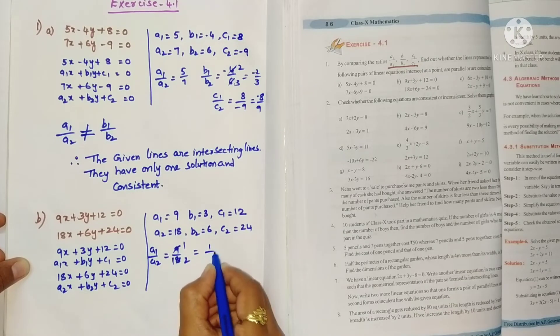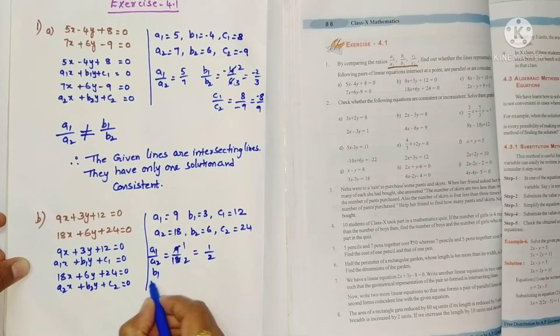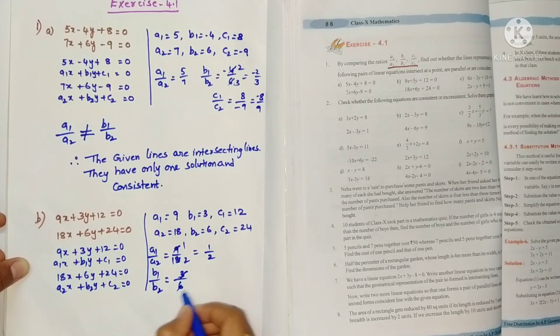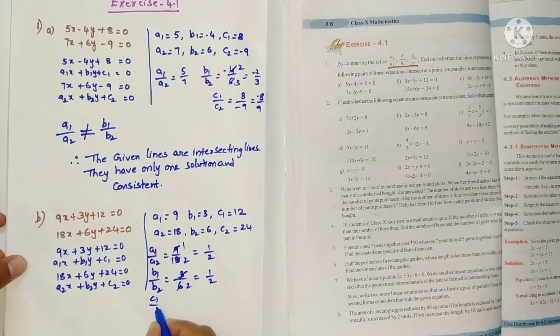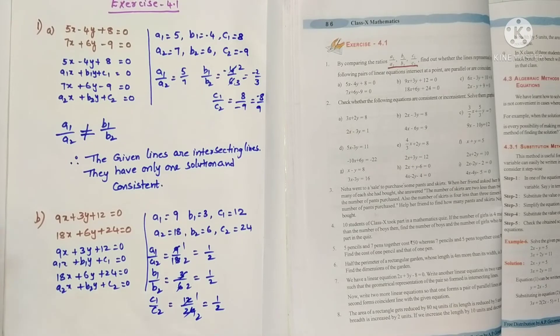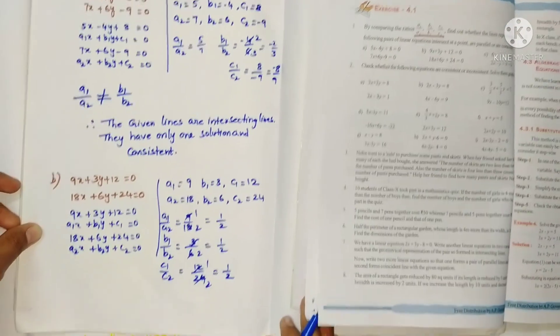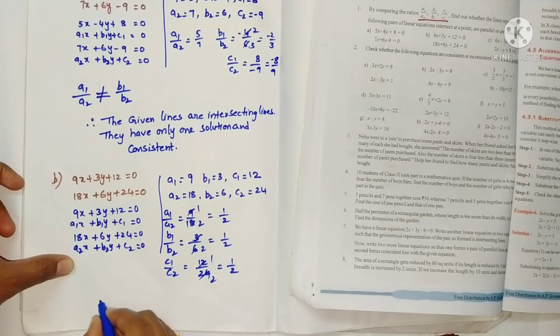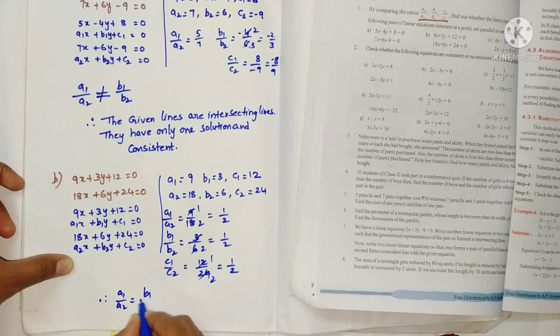So a1 by a2 is 1 by 2, b1 by b2 is also 1 by 2, c1 by c2 also 1 by 2. So finally what can we write: a1 by a2 equals b1 by b2 equals c1 by c2.